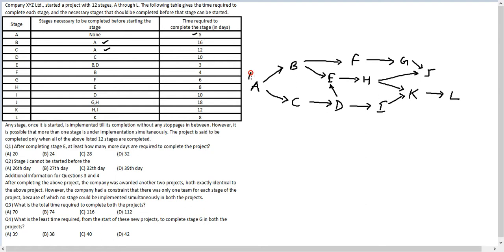Stage A takes 5 days, so it goes from day 1 to day 5. Stage B takes 16 days, going from day 6 to day 21. Stage D takes 10 days, going from day 18 to day 27.